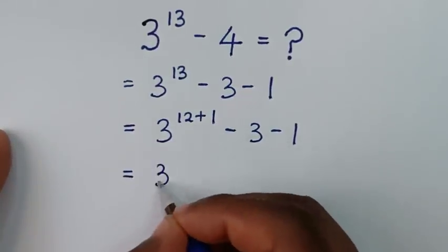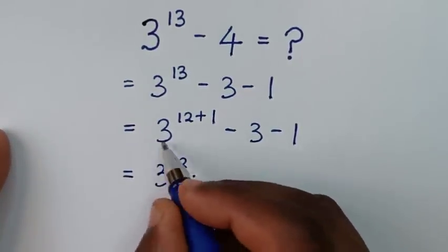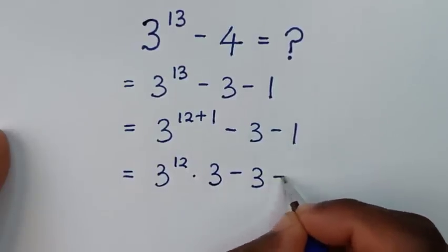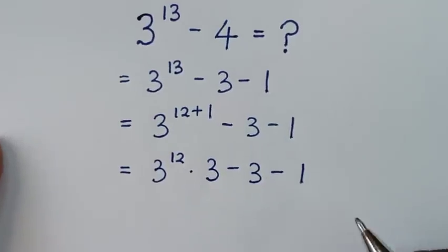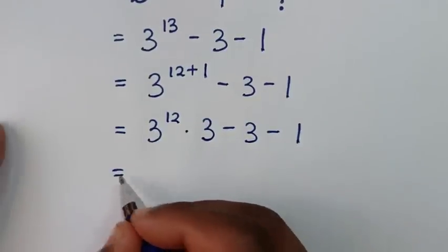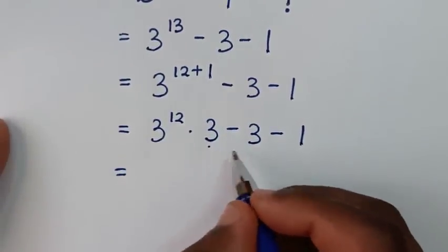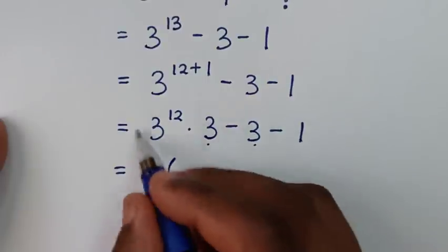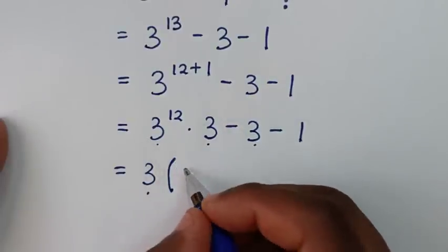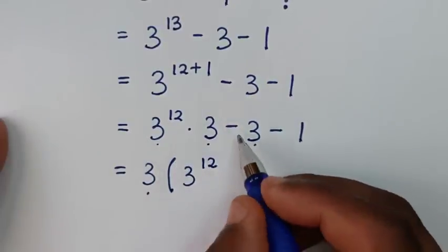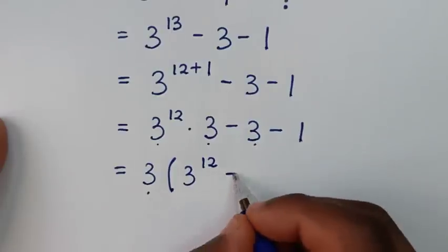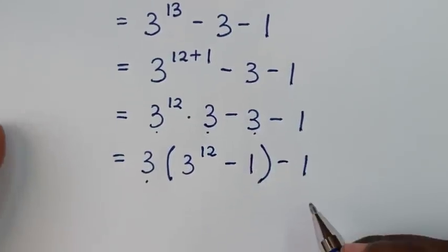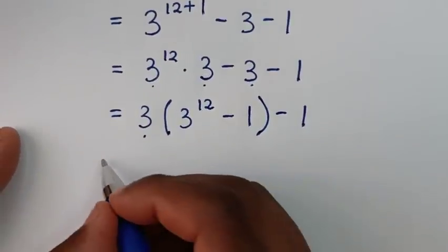Then it will be equal to: 3 power of 12 plus 1 is the same as 3 power of 12 times 3 power of 1, which is 3. Then minus 3 minus 1. Then it will be equal to: now 3 is common, so we take 3 out of the bracket. 3 divided by 3 is 1 — giving us 3 power of 12 minus 1 in the bracket — then minus 1.